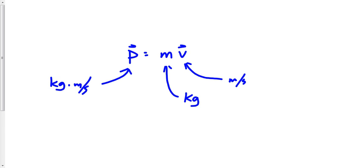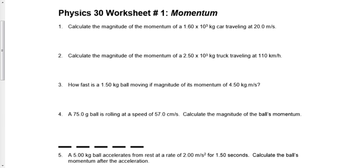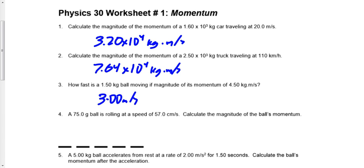Let's take a look at the worksheet that we had for homework last night. Worksheet number one. Question number one, I got 3.20 times 10 to the 4 kilograms meters per second. Number two, I got 7.64 times 10 to the 4 kilograms meters per second. Three, I got 3.00 meters per second. And number four, I got 4.28 times 10 to the negative 2 kilograms meters per second. Any of those questions we need to go over? All right then, you guys are just that smart.